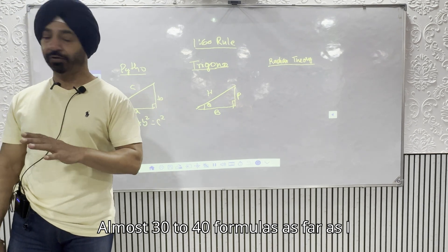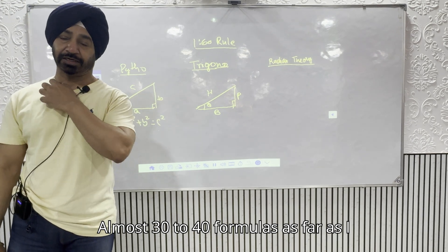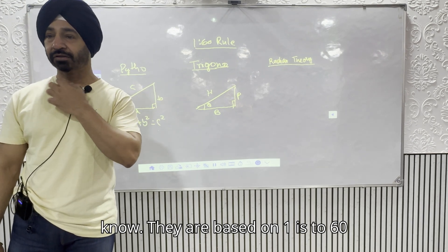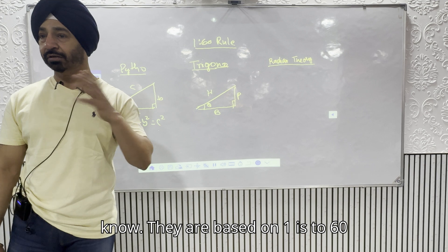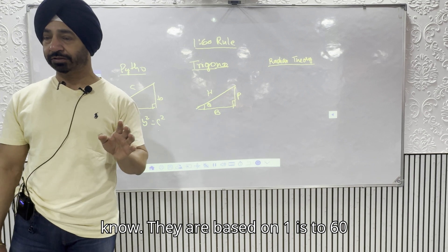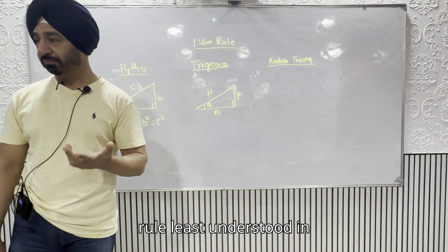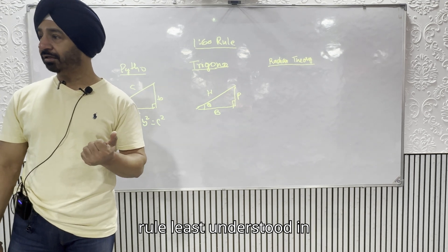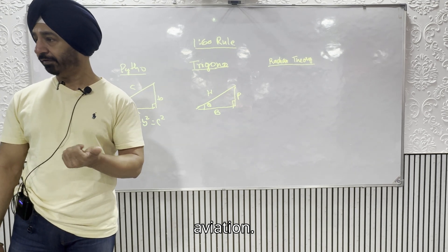Almost 30 to 40 formulas, as far as I know, they are based on the 1-in-60 rule — the least understood topic in aviation.